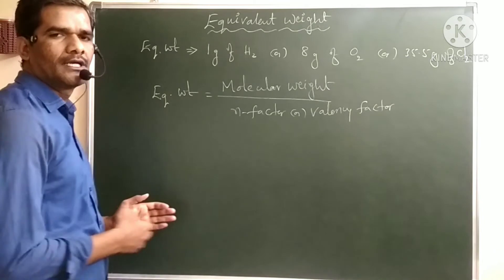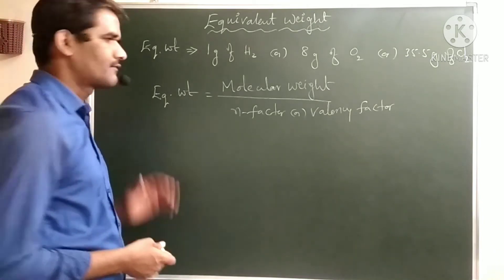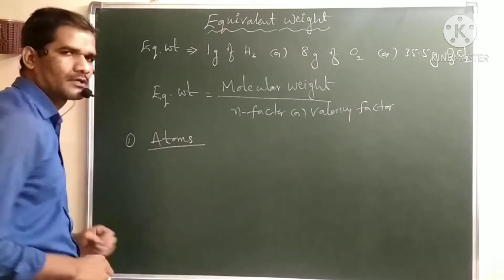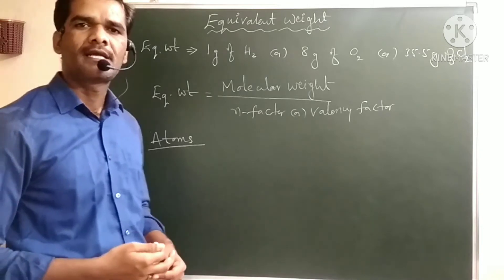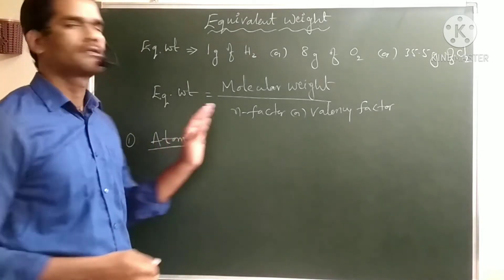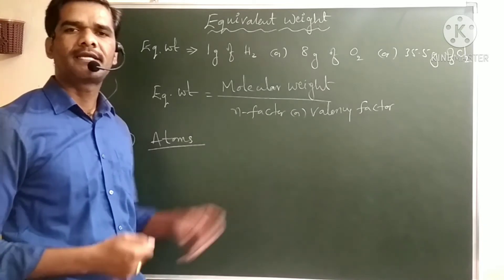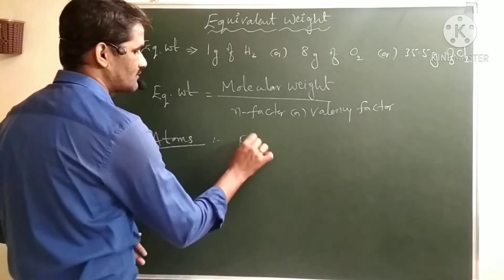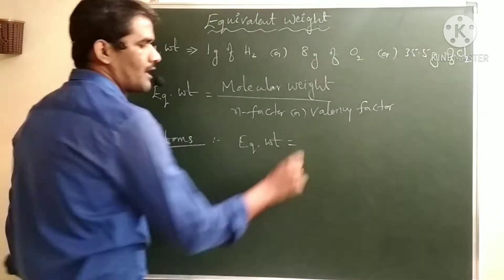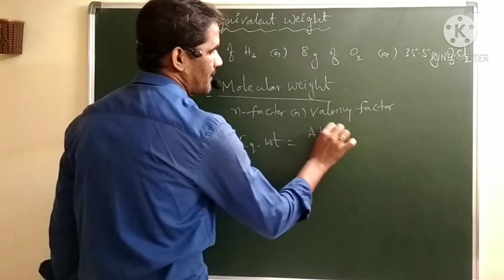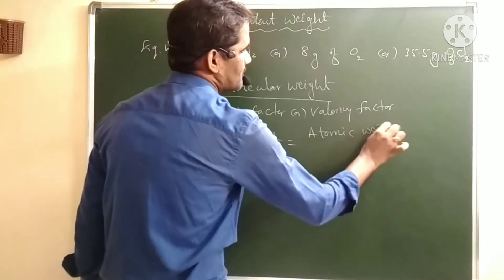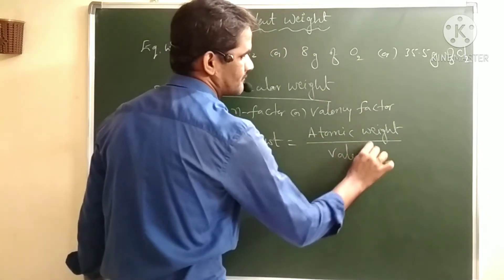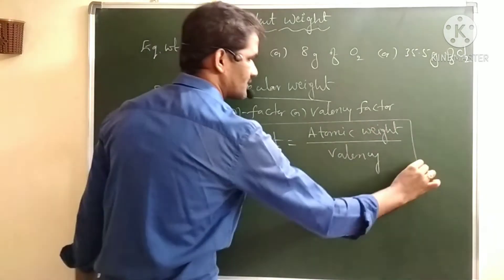Now, equivalent weight for different substances in different cases. First, let us take atoms. For atoms, the n-factor is its valency. So equivalent weight for atoms is equal to atomic weight of that element divided by its valency.